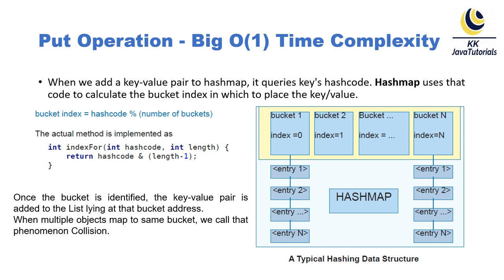HashMap first finds the hash code of the key object — since both key and value are objects in HashMap — then applies the hashing algorithm to find the correct bucket where the key-value pair has to be added. Once the bucket is identified, the key-value pair is added to the linked list at that bucket address. When multiple objects map to the same bucket, we call that phenomenon a collision. If you are using a custom object as a key, you should properly override the hashCode() and equals() methods in that custom key class.